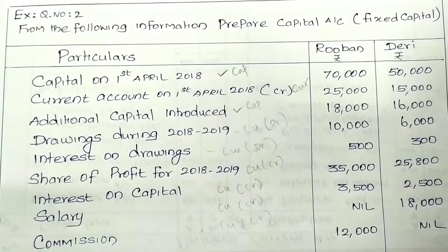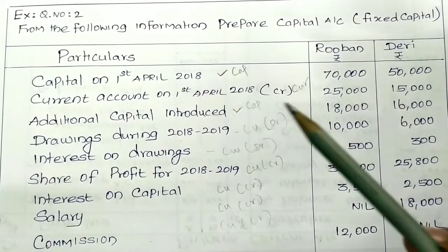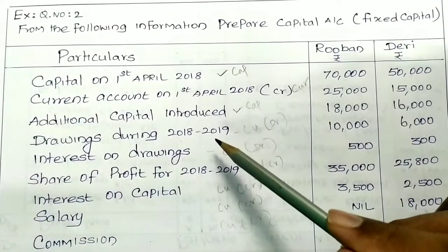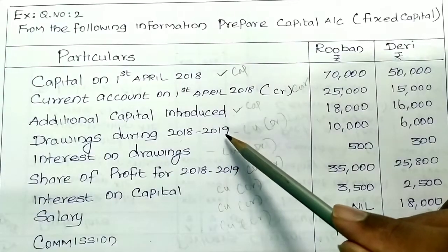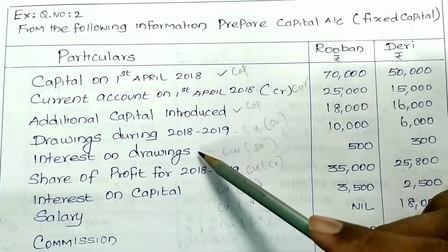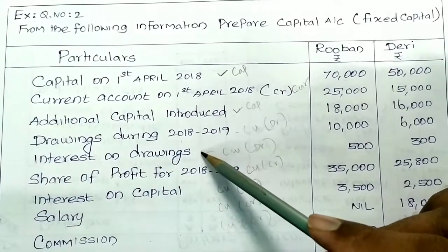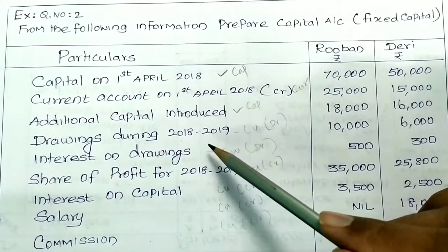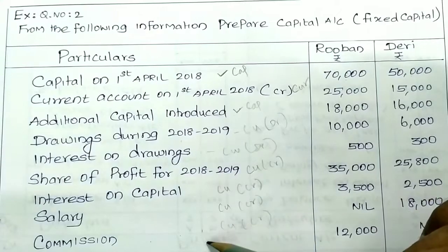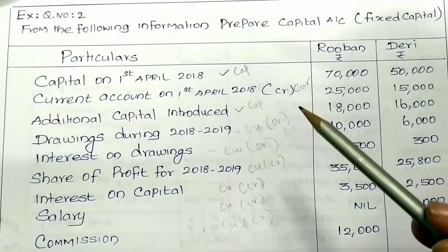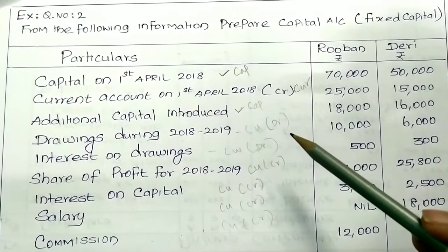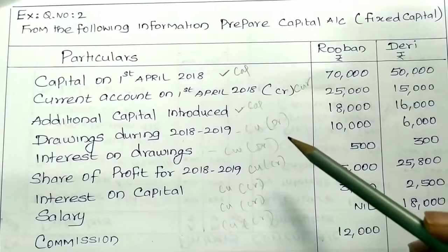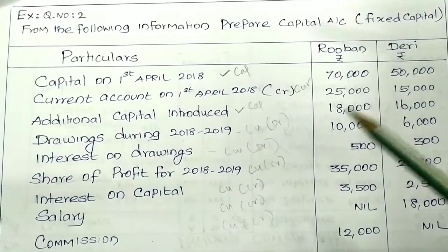Commission is also on the current account credit side. On the debit side we have drawings during the year 2018 to 2019, and interest on drawings. Once we have all entries in the current account and capital account, we get the sum of each account.